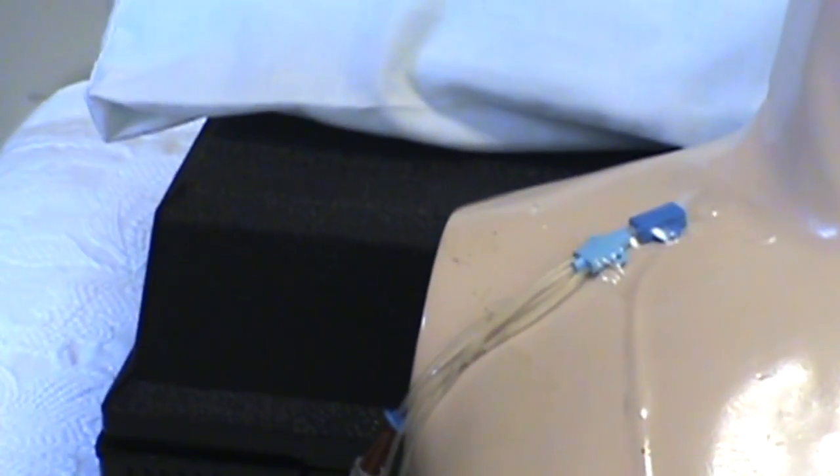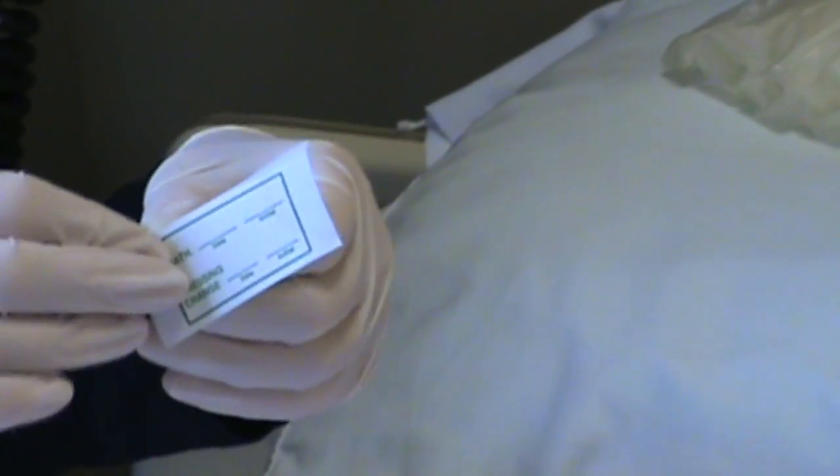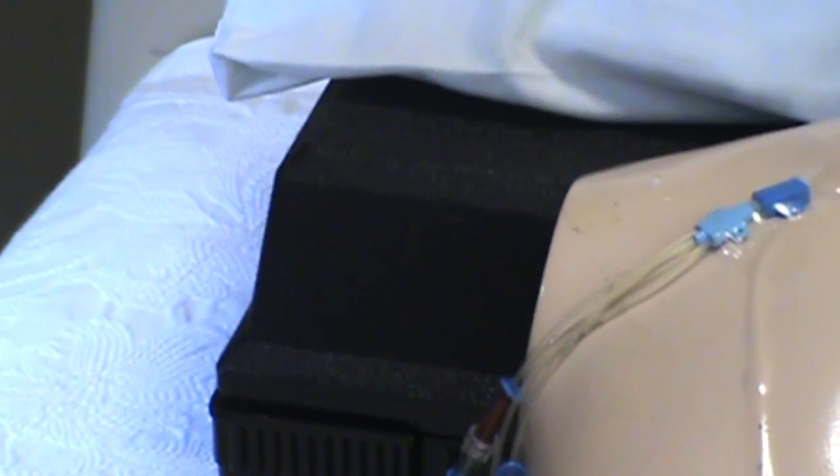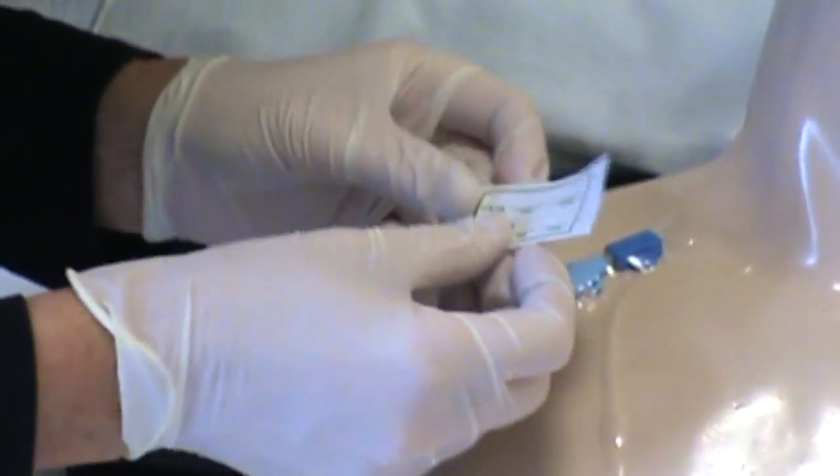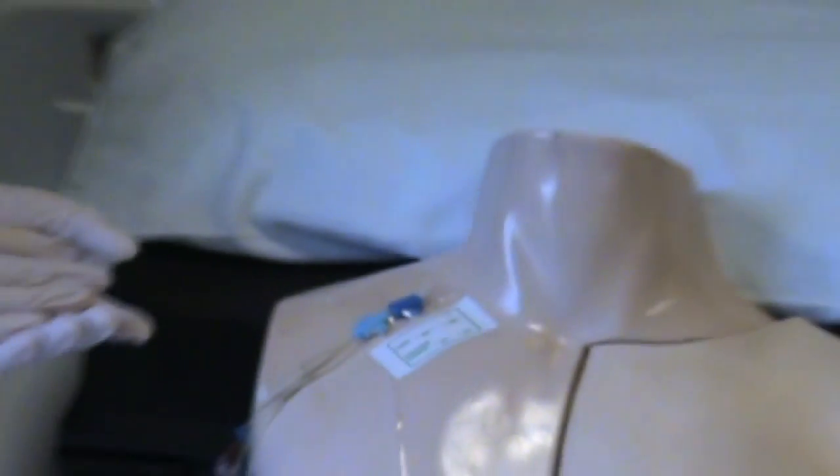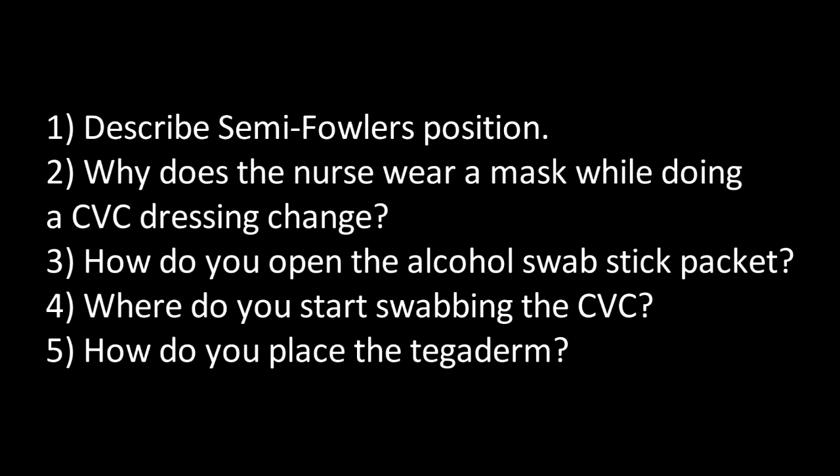Throw that away, and then you have a little label here that says your name and the date and the time you changed it. Go ahead and fill that out and then peel that off, and then stick it on your tegaderm, not over the site but next to it, so the next person can see when it was last done. And that's all to changing your CVC dressing. See if you can answer these questions.